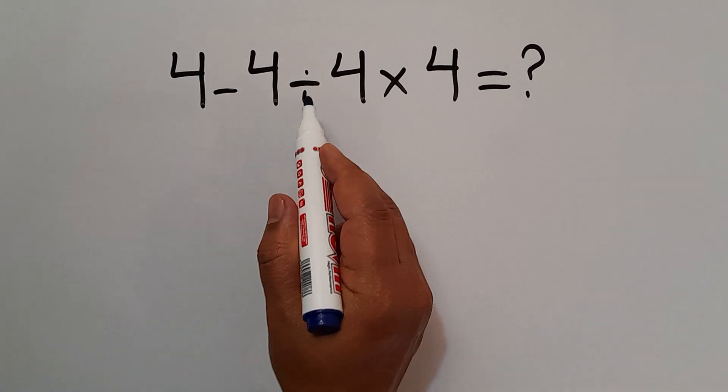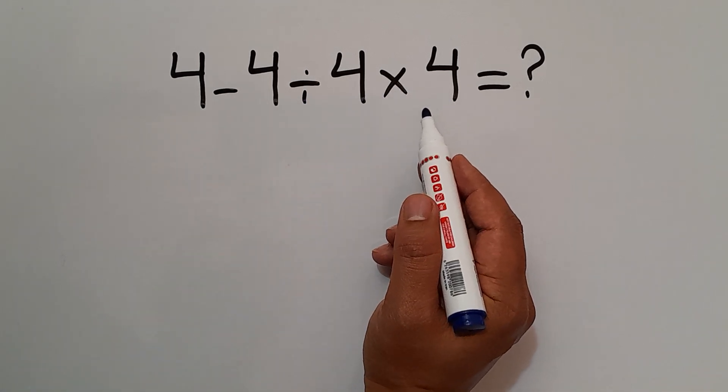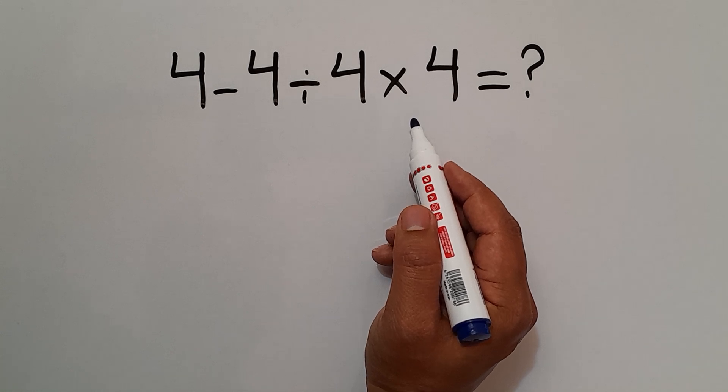4 minus 4 divided by 4 then times 4. Are you ready to solve? Let's go down and get started.